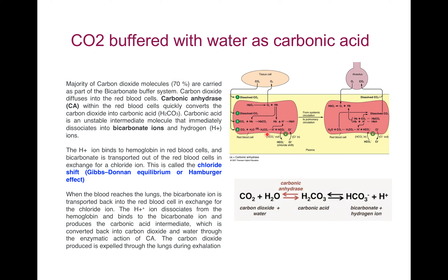When the blood reaches the lung, the bicarbonate ions are transported back into the RBC in exchange for chloride ions. The H+ ion dissociates from hemoglobin and binds to bicarbonate ions, producing carbonic acid as an intermediate, which is converted back into carbon dioxide and water through the enzymatic action of carbonic anhydrase. This carbon dioxide is then expelled through the lung during exhalation.